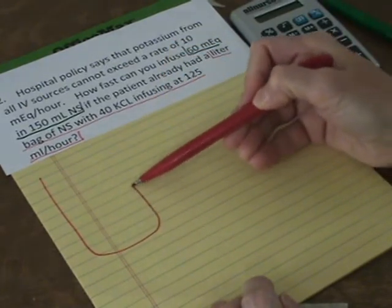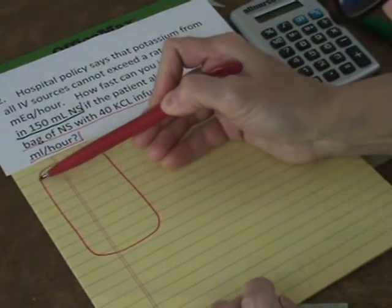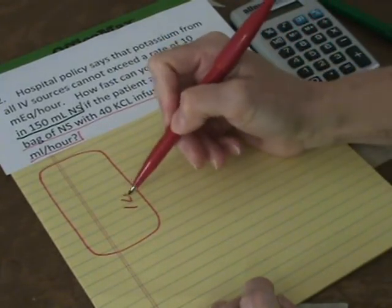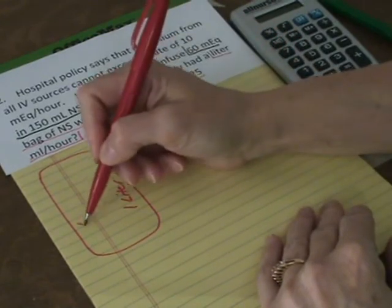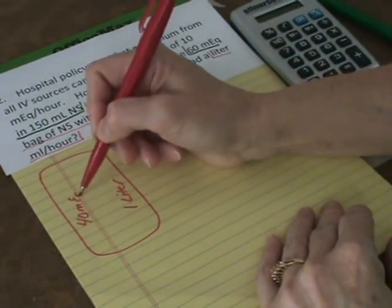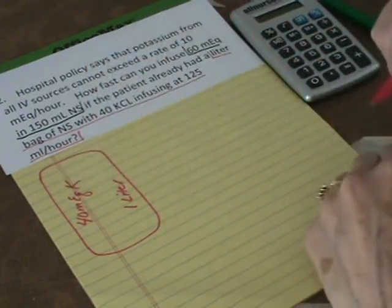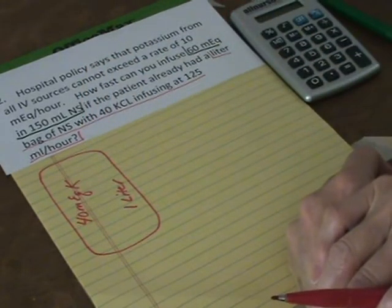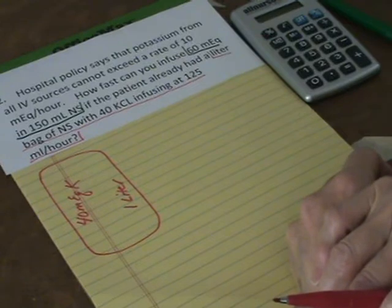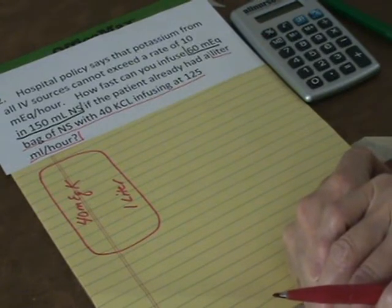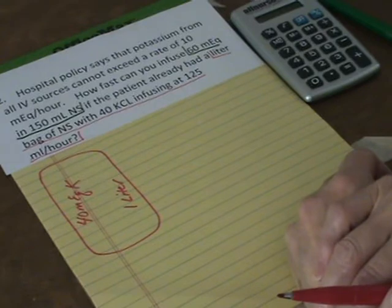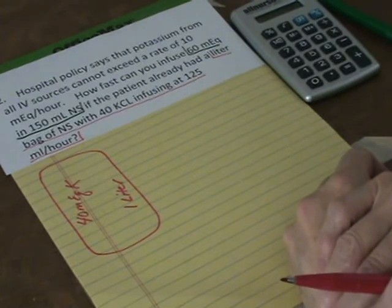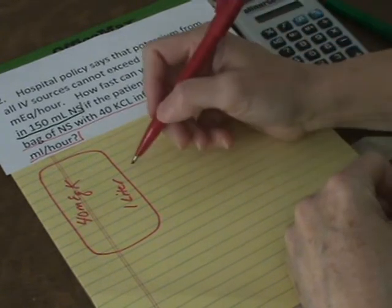I want you to think about this patient. Here's their liter bag. This liter bag, so it's 1000 milliliters, and it has 40 of K in it, 40 milliequivalents of potassium, and it's going at 125 an hour. One of the things I need to understand is how much potassium is the patient getting every hour already.